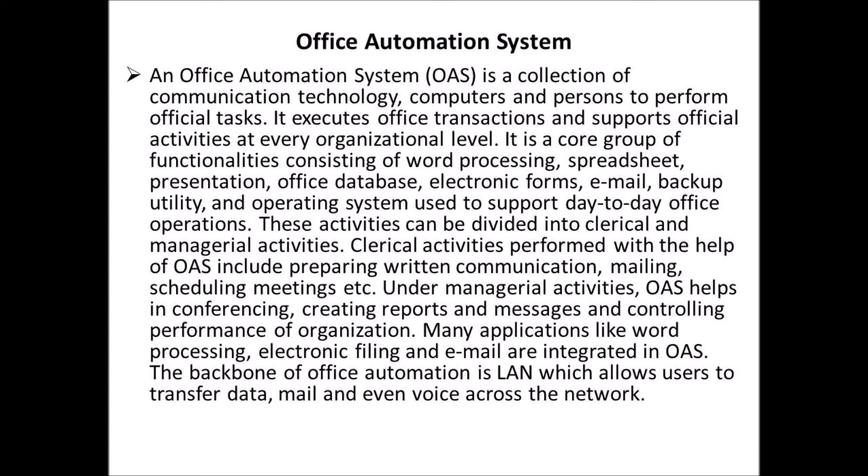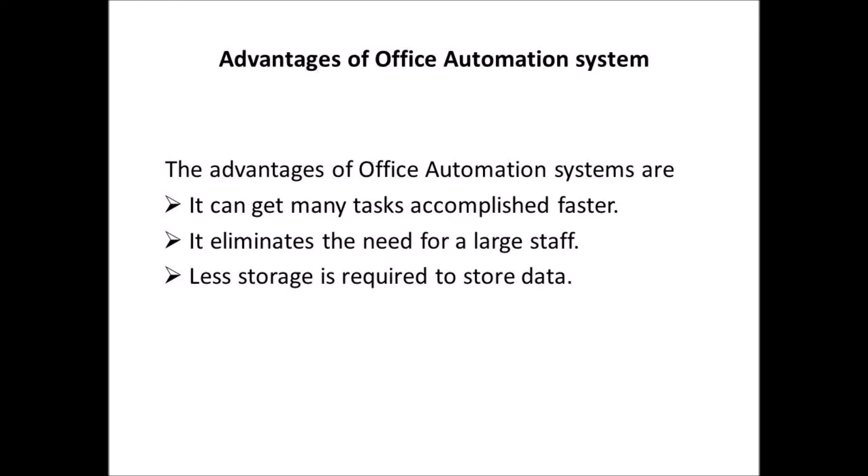Many applications like word processing, electronic filing and email are integrated in office automation systems. The backbone of office automation is LAN, which allows users to transfer data, mail and even voice across the network. The advantages of office automation systems are: first, it can get many tasks accomplished faster; second, it eliminates the need for a large staff; third, less storage is required to store data.